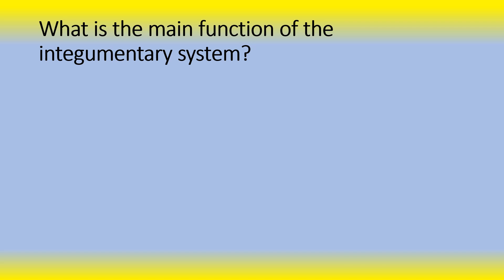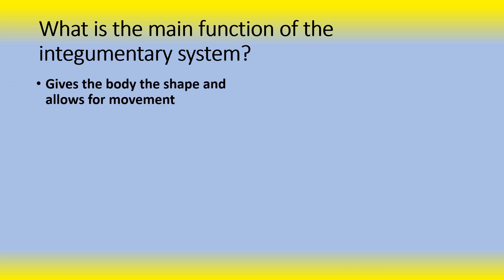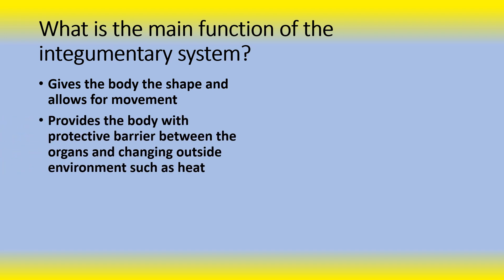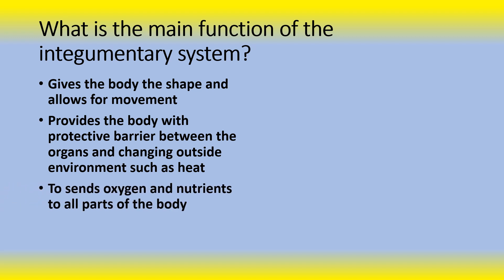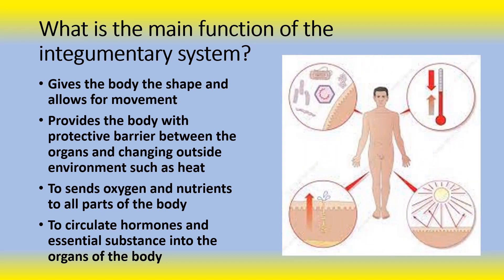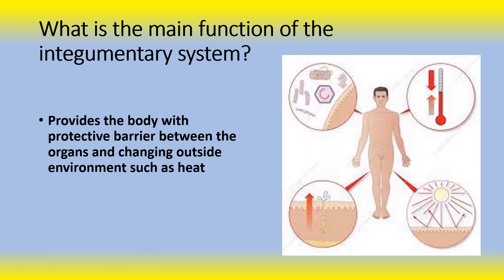Next question: What is the main function of the integumentary system? Does it give the body its shape and allow for movement? Does it provide the body with a protective barrier between the organs and changing outside environments such as heat? Does it send oxygen and nutrients to all parts of the body? Or does it circulate hormones and essential substances in the organs of the body? The answer is it provides the body with a protective barrier between the organs and changing outside environments such as heat.